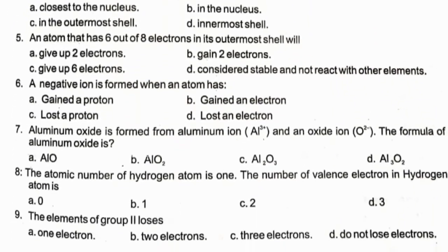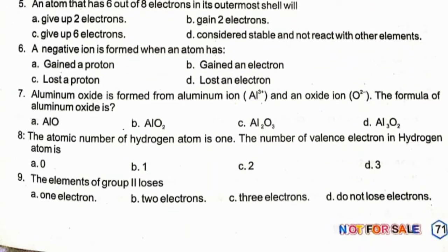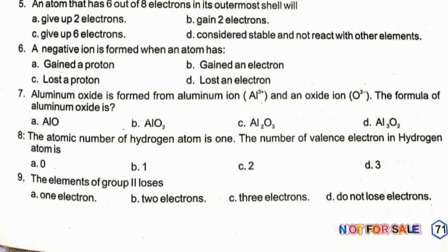A negative ion is formed when an atom has option B gained an electron. Aluminium oxide is formed from aluminium ion and oxide ion; the formula of aluminium oxide is option C.